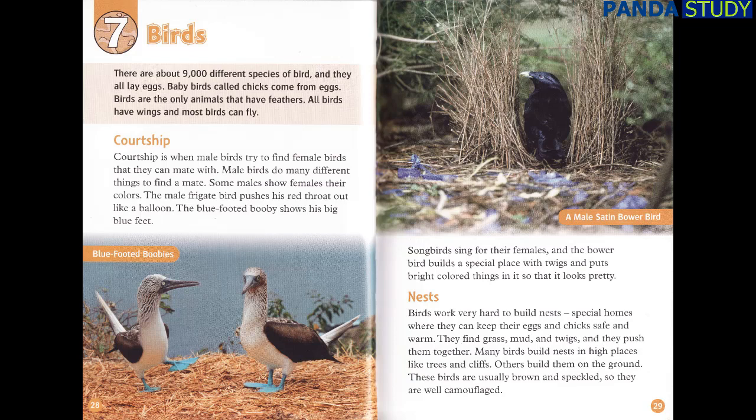Courtship is when male birds try to find female birds that they can mate with. Male birds do many different things to find a mate. Some males show females their colours. The male frigate bird pushes his red throat out like a balloon. The blue-footed booby shows his big blue feet. Songbirds sing for their females, and the bowerbird builds a special place with twigs and puts bright coloured things in it so that it looks pretty.